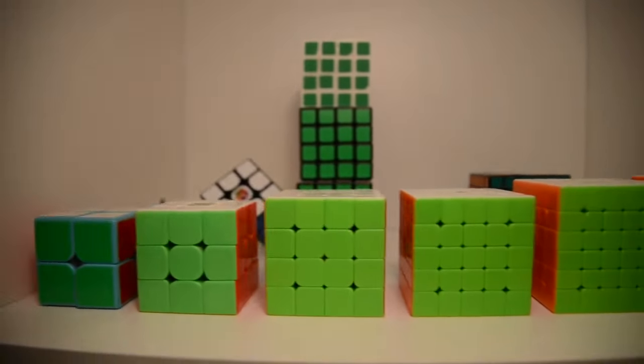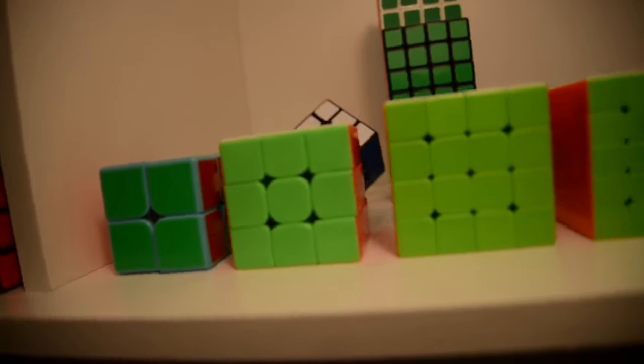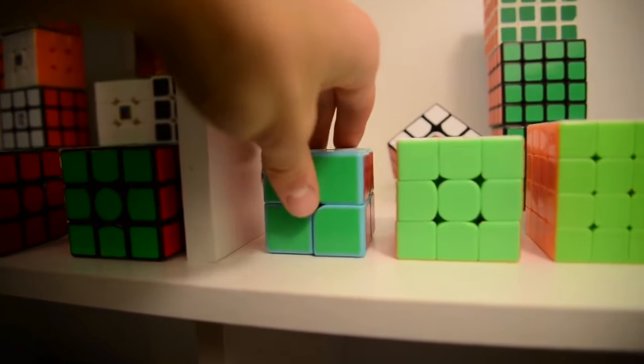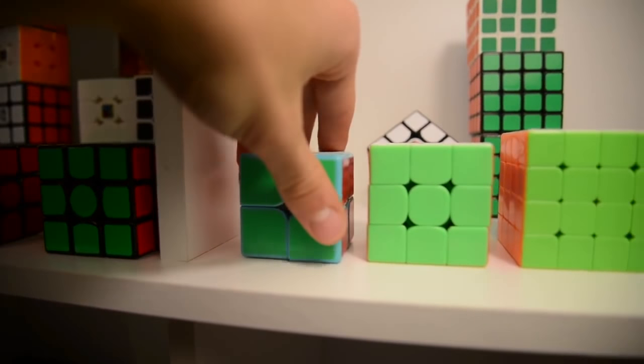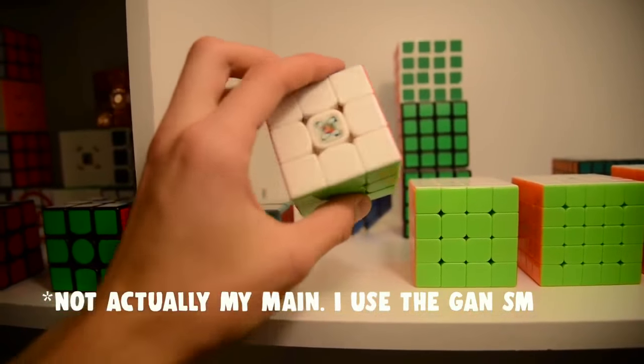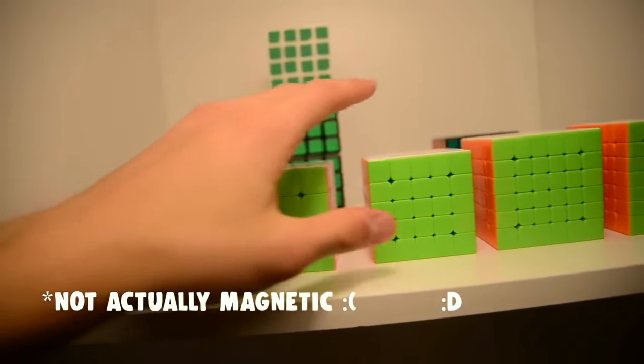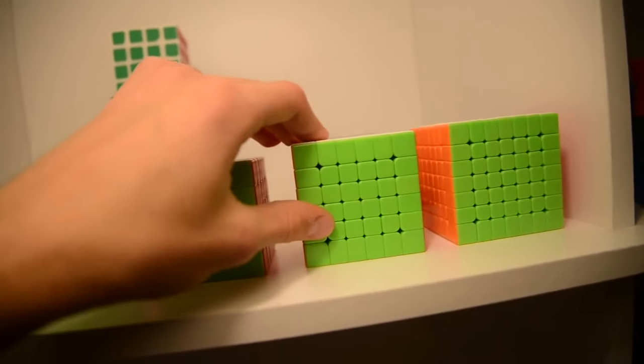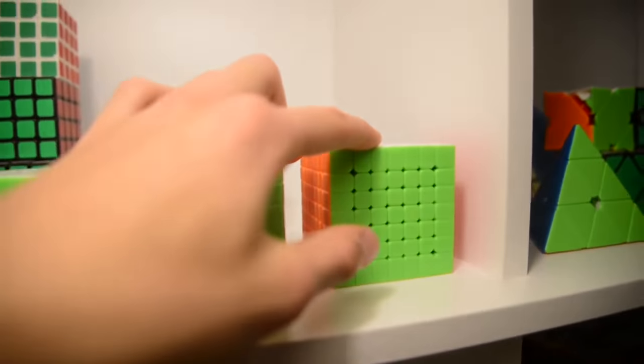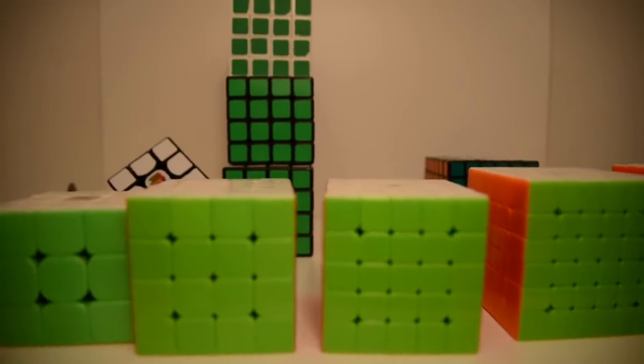Now let's head on to my mains. These are basically all the main 2x2 through 7x7. Here we have the Moyu Weipo in blue color and I accidentally dropped it, so it broke on me. So that's really sad. This is the GTS version 2, magnetic. The Wuque magnetic 4x4. This is the Wushuang 5x5. Wushuang 6x6 version 1. And the Wushuang 7x7. I love this cube. I really recommend you get this because it's way better than the 6x6 that I have. I believe my 6x6 kind of sucks.